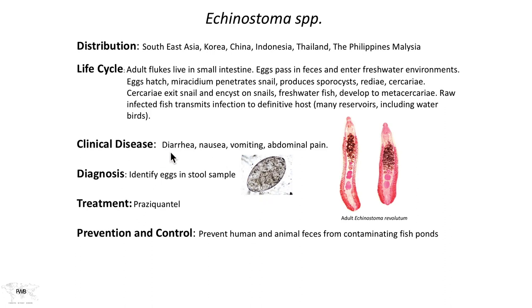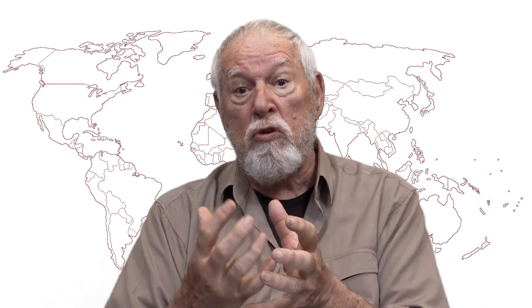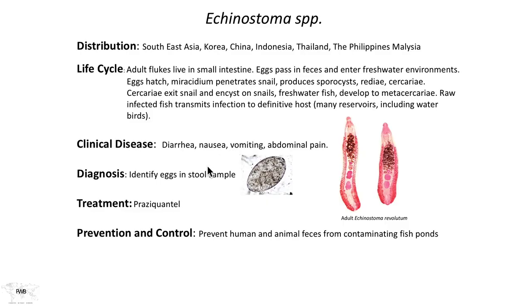Clinical features include diarrhea, nausea, vomiting, and abdominal pain — again nondescript, with regards to heavy infections. This could involve literally hundreds of worms living in the small intestine, but they don't do much harm while there. As a result, there are no life-threatening aspects to its life cycle, but it's very discomforting to have this as a presence every day after acquiring the infection. Fortunately, praziquantel is an effective treatment in this case as well.